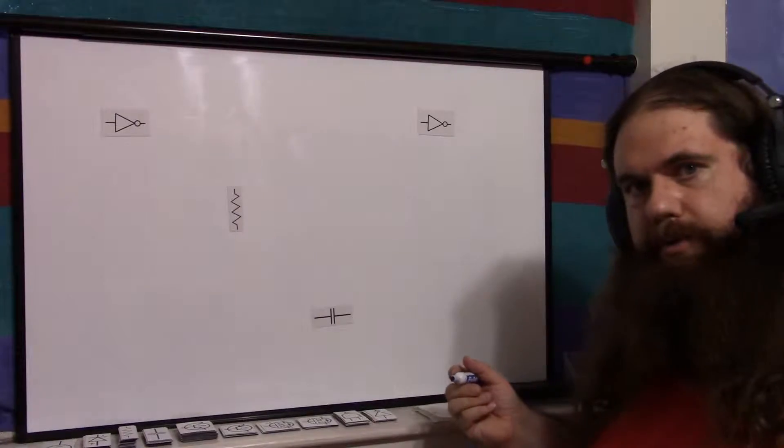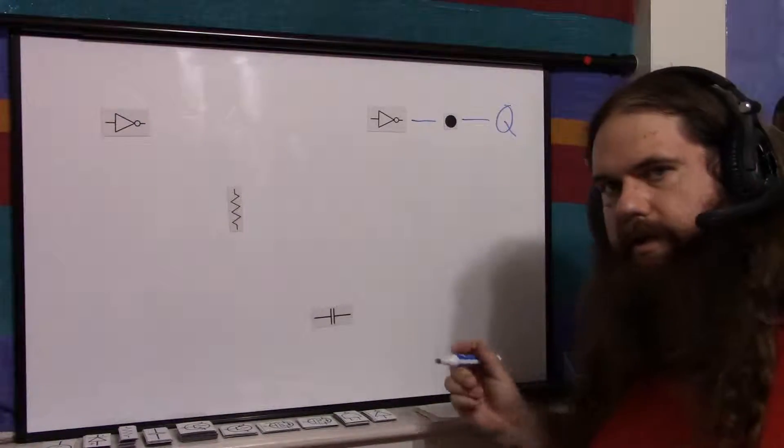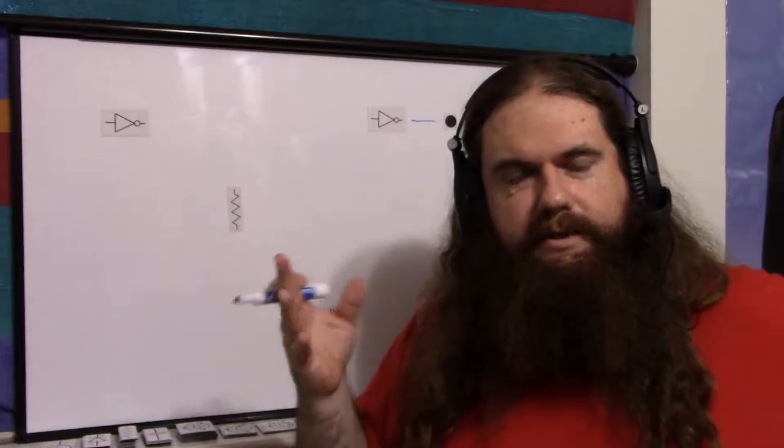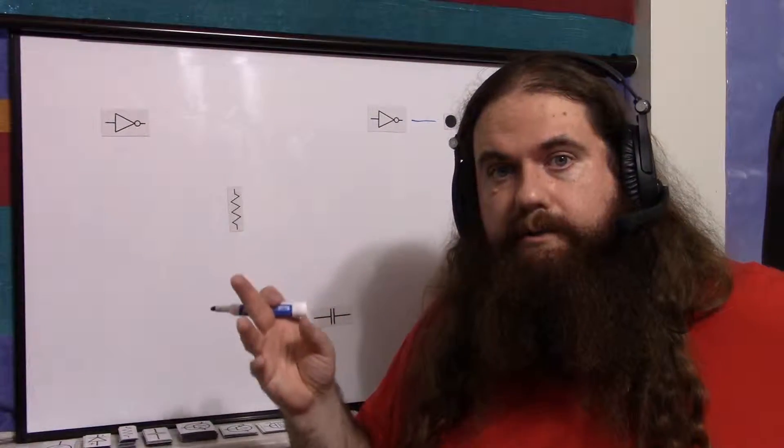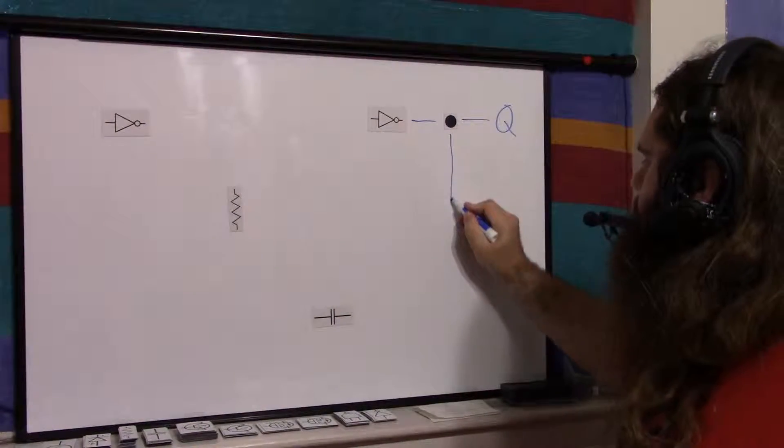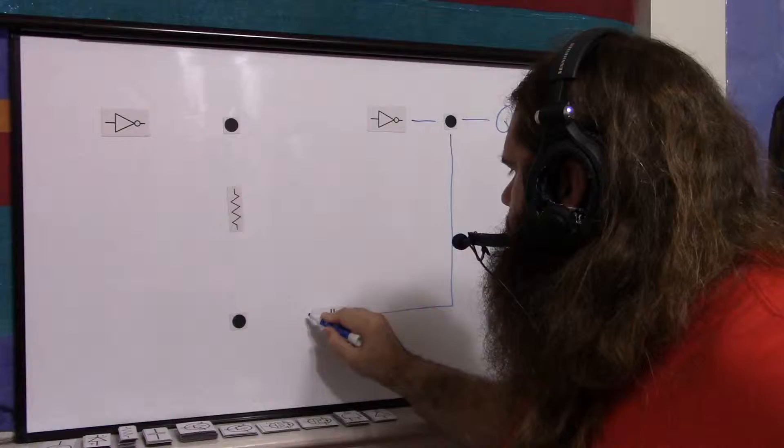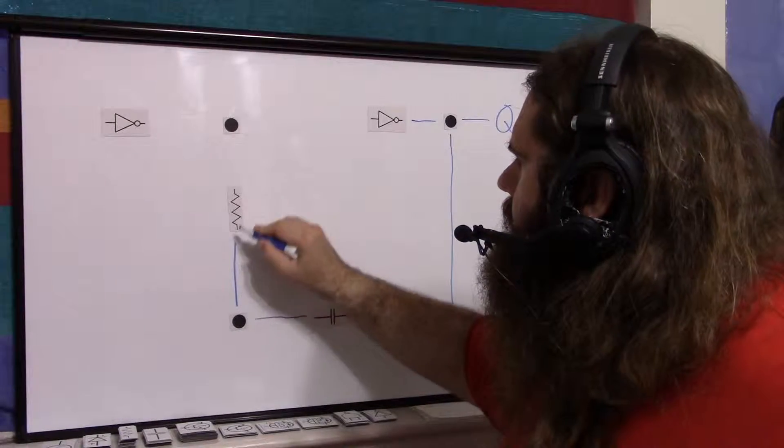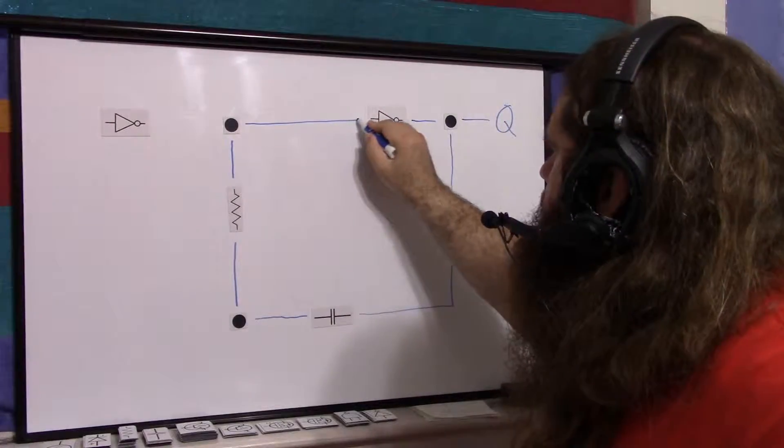Give myself some more space. So your output is this inverter, and I just call it Q because it goes high, low, high, low. It just alternates. It's roughly a square wave generator. The output of this inverter also connects to this side of the capacitor. The capacitor goes through the resistor, and up, and back into that inverter.